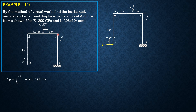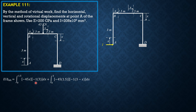In the next section, big M is negative 45 times 1.5. The horizontal moment arm is 1.5, and the virtual moment is negative 1 times (3 minus X). So we add the integral from 0 to 3 of (−45 × 1.5)(−1 × (3 − X)) dx. Using the calculator, the first integral is 151.875 and the second integral is 303.75.